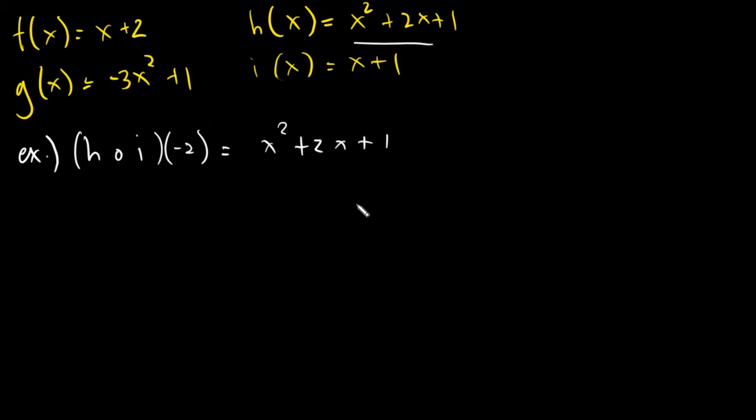And then after we have written what is the value of h, we must take a look at i. After we have identified i, every value of x in h will be replaced by this one in the box, which is x plus 1. All the values of x will be replaced by x plus 1. So this is x plus 1 parenthesis squared, plus 2 parenthesis, of course our x is again x plus 1, then we will have parenthesis plus 1. You will notice, the only thing that changed here would be x, and x became x plus 1.